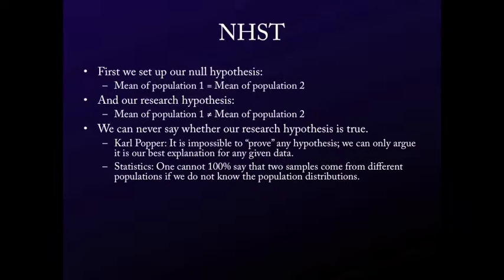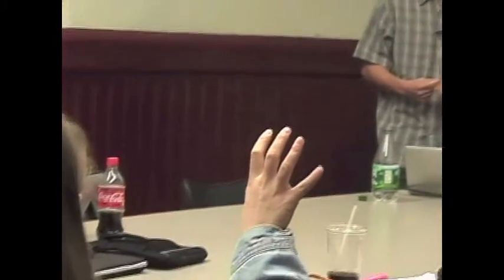Statistically, you can never 100% say that two samples come from different populations if you don't actually know the population distributions. If you did know the population distribution and you knew the highest score was 110, and you pulled a sample with a mean of 120, you could say it didn't come from that population. But in general you're not in that situation. All you can say is it was really unlikely — not that it couldn't have happened. A student notes that two samples can be so different from the population, and you can't definitively say whether they are or are not from the same one. This is a probabilistic statement, and you kind of have that problem in all of science.